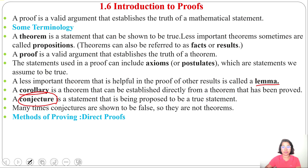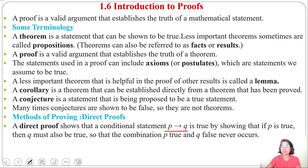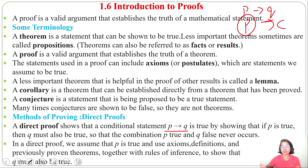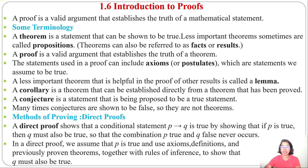Next is the method of proving. There are two types: direct proof and indirect proof. A direct proof shows that a conditional statement P implies Q is true by showing that if P is true then Q must be true. We assume P is true and use axioms, definitions, previously proven theorems, and rules of inference to show that Q must be true.